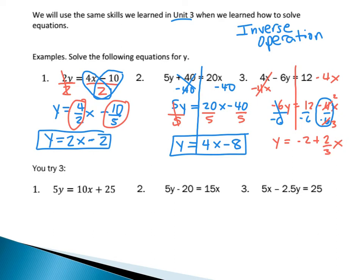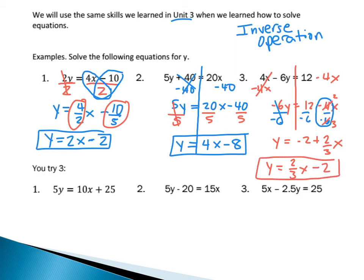The last thing I'll ask you to do is rewrite this in proper order. I like to see the x term first followed by the number — like 2x minus 2, or 4x minus 8. So I rewrite this as y equals 2 over 3x, and the second term is negative 2, so I write minus 2. My final answer with x first: y equals 2 over 3x minus 2.